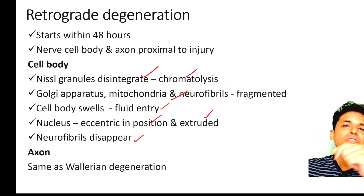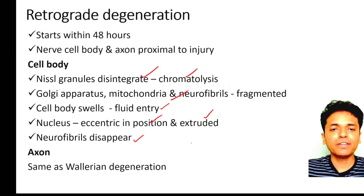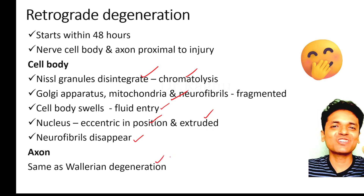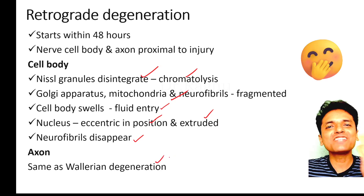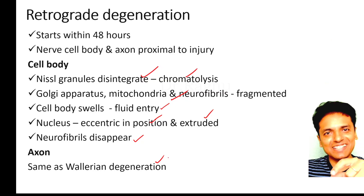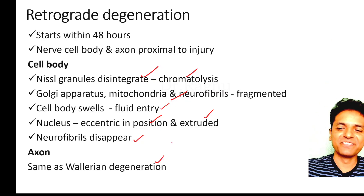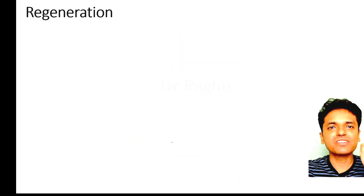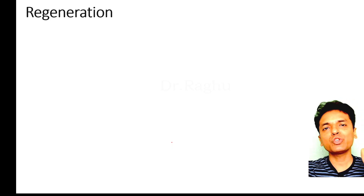As for the axon, the same degenerative changes occur in the proximal axon as were seen in Wallerian degeneration.